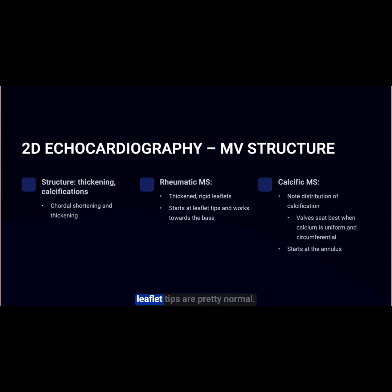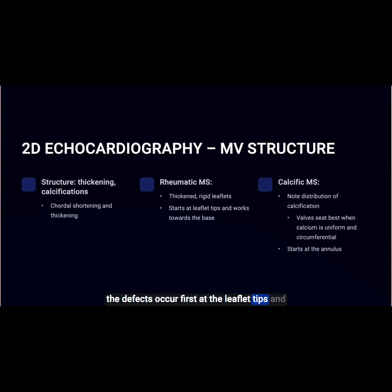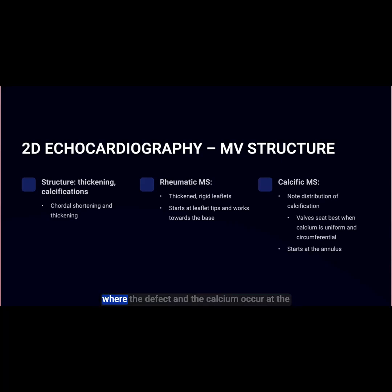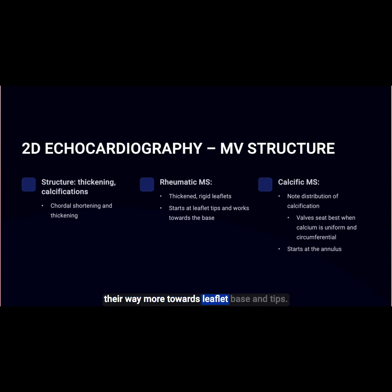In calcific patients, the leaflet tips are pretty normal. In rheumatic mitral stenosis patients, the defects occur first at the leaflet tips and work towards the base of the mitral valve. This is the opposite of calcific mitral stenosis, where the defect and calcium occur at the mitral valve base and annulus first, and then work their way more towards the leaflet base and tips.